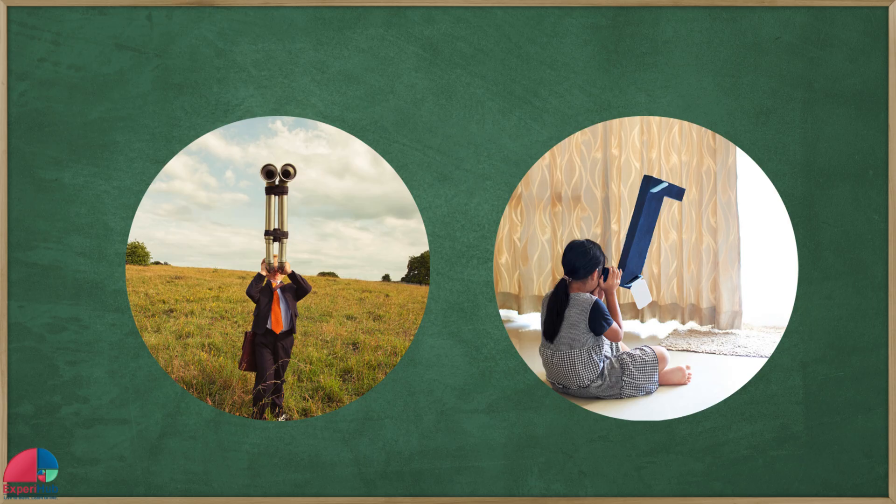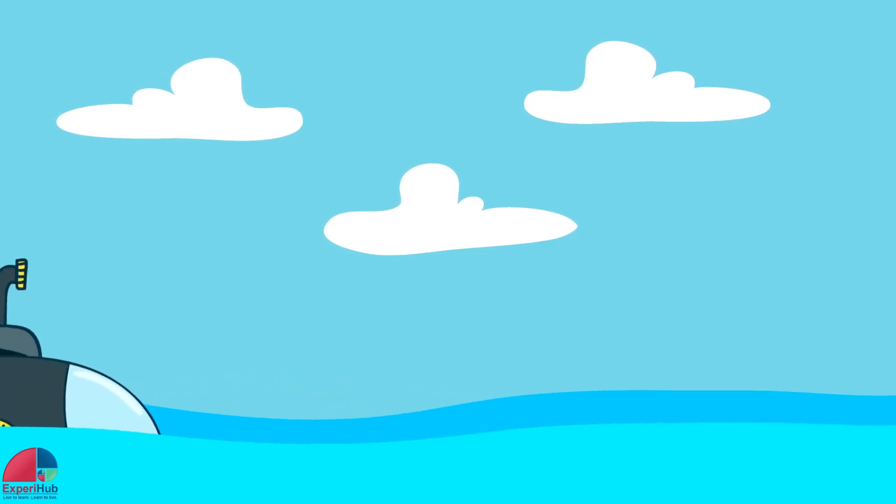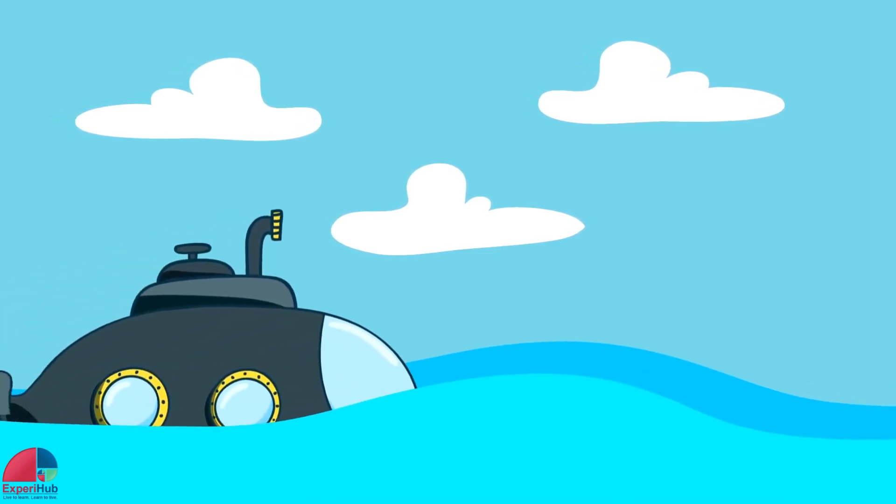A periscope is a tool that lets you see over or around things like walls or obstacles. Submarines use periscopes to see above the water while staying hidden below.